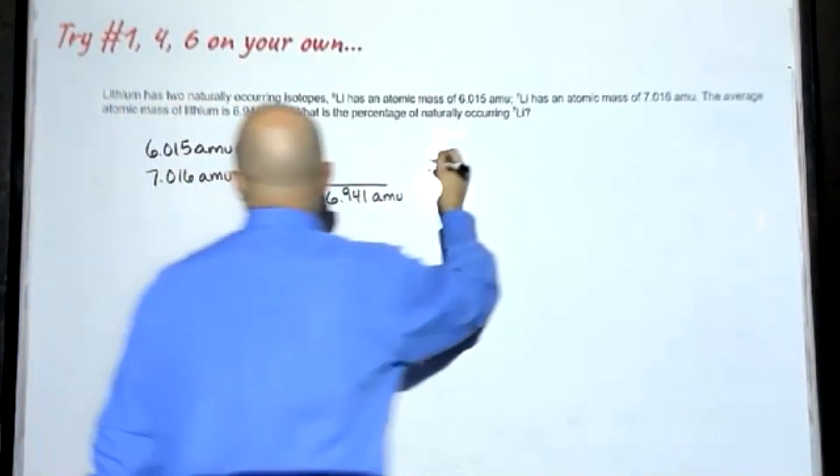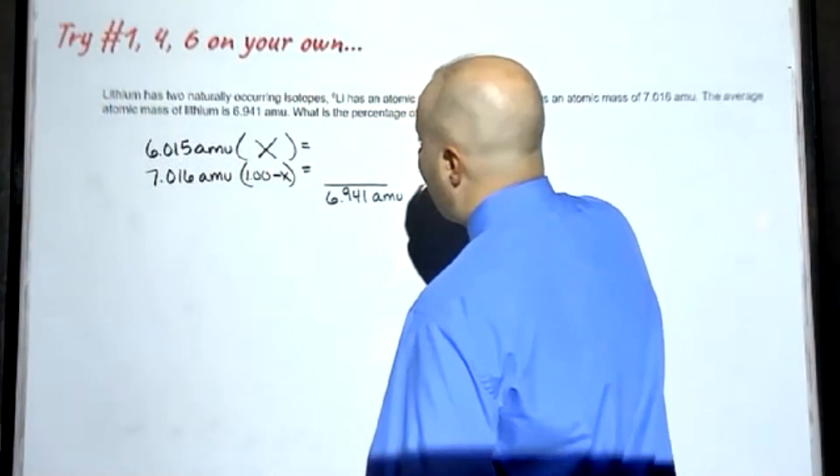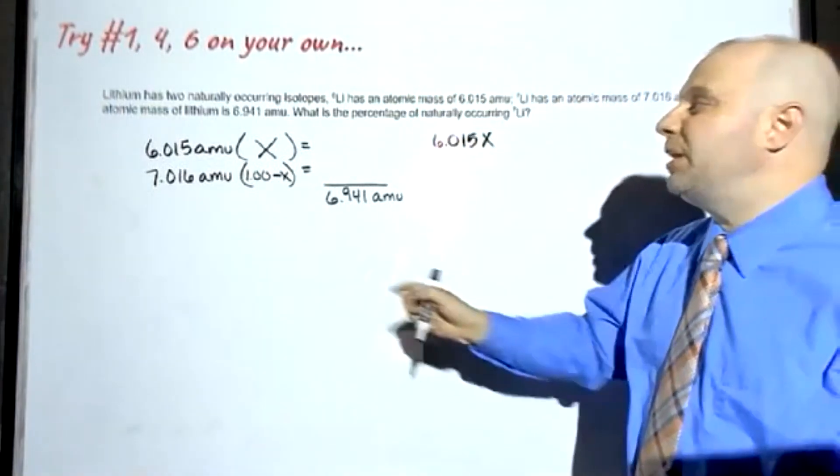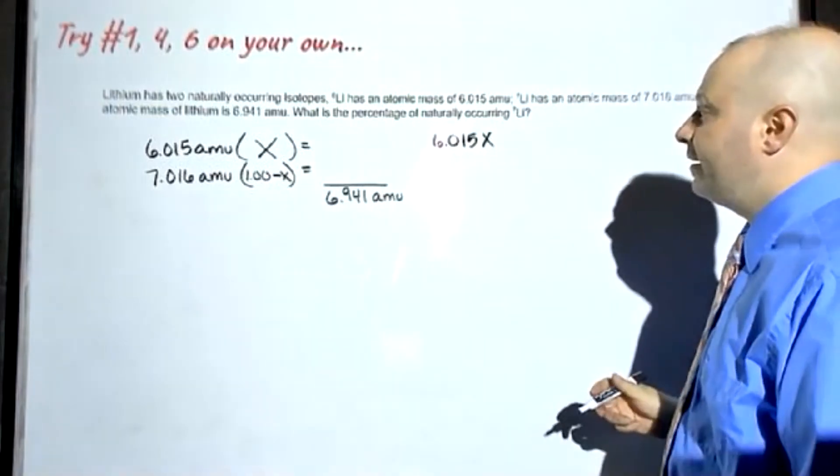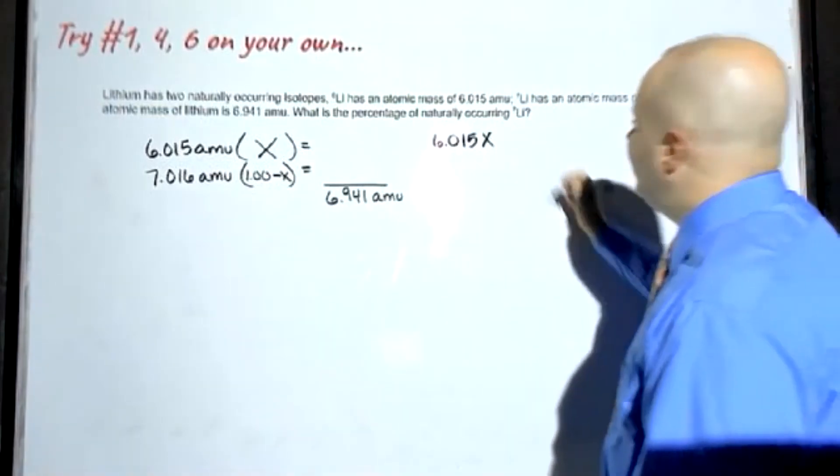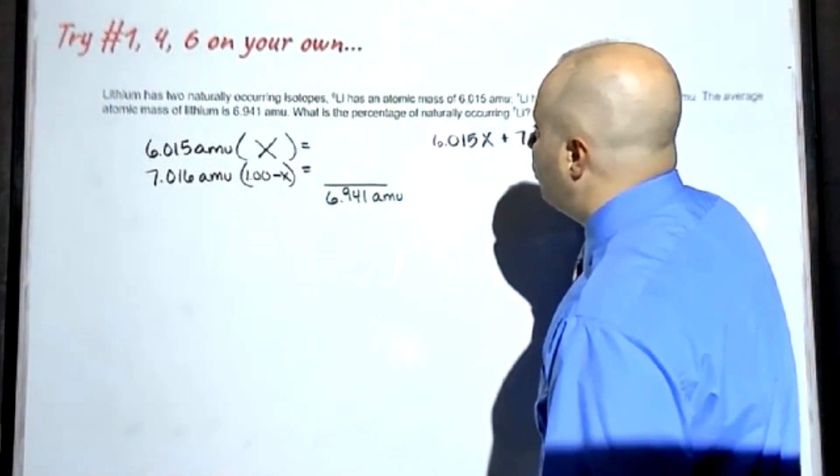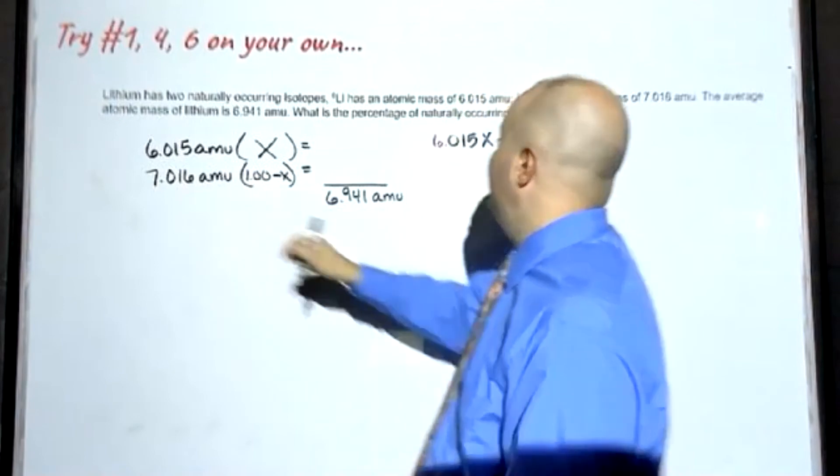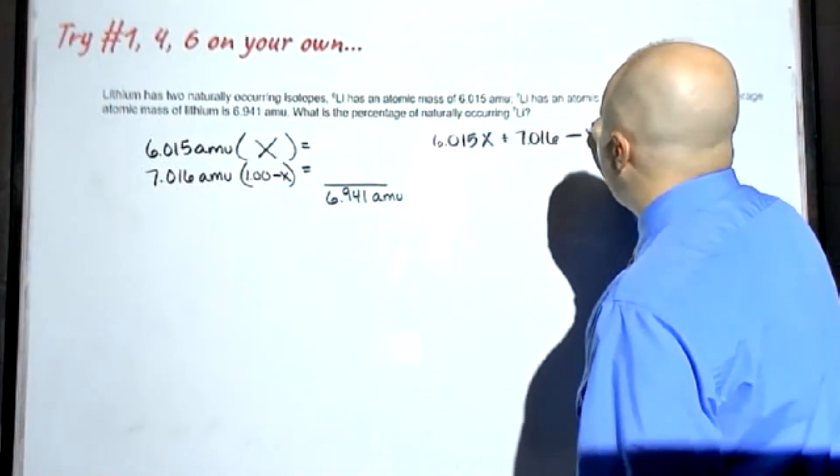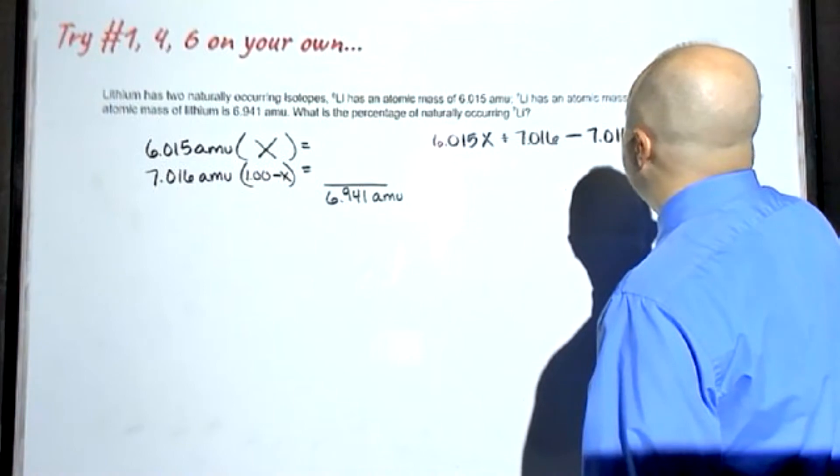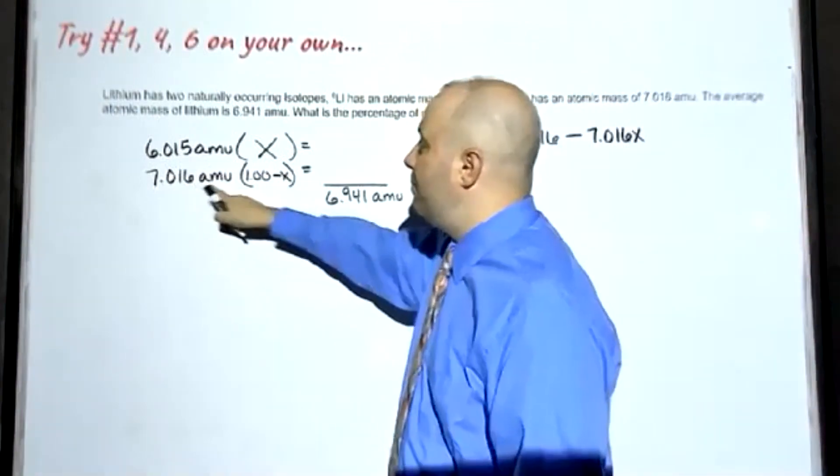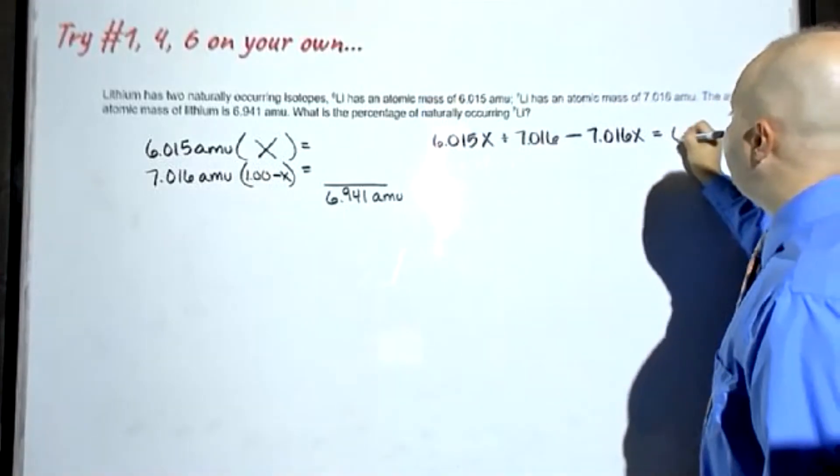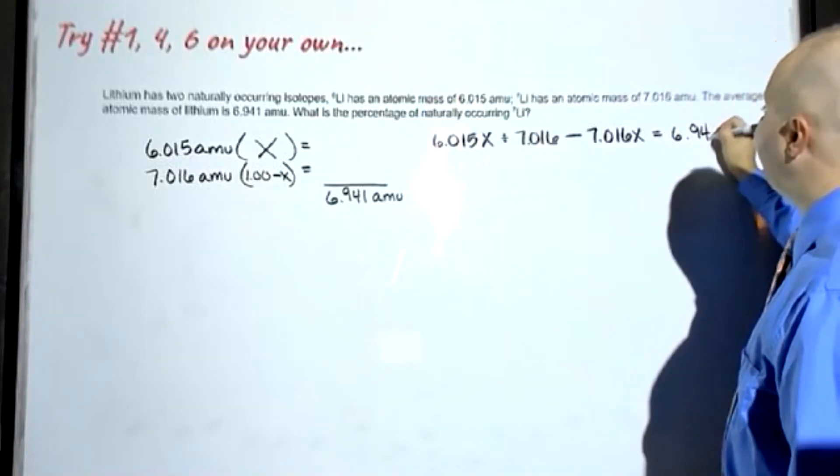So similar to what we did last time, we're going to write an equation that adds together these two pieces. For the first part, we're going to get 6.015X. And again, I'm going to drop AMU because it appears on both sides of our equation. The second piece is we're going to add 7.016, and we're going to subtract 7.016X. That's when I take this and multiply it through times negative X. That is going to equal 6.941.